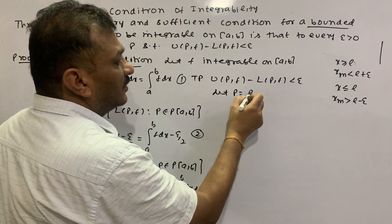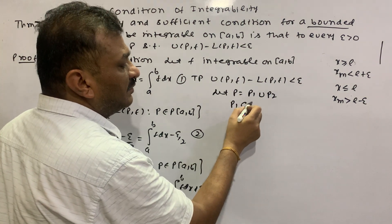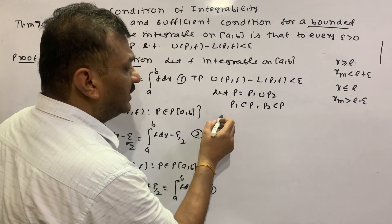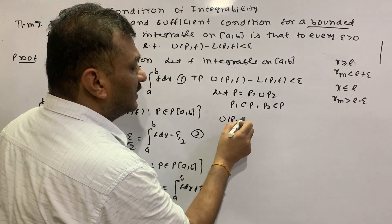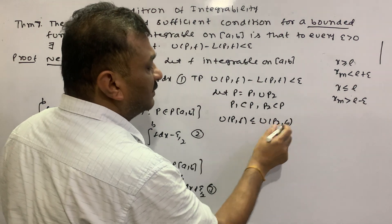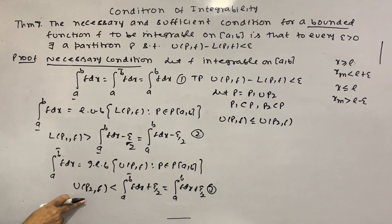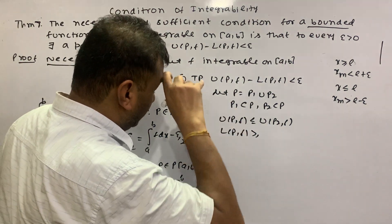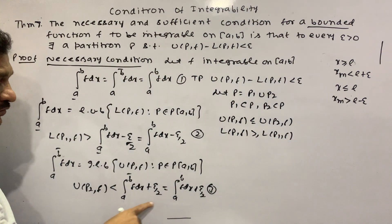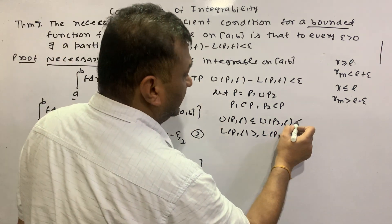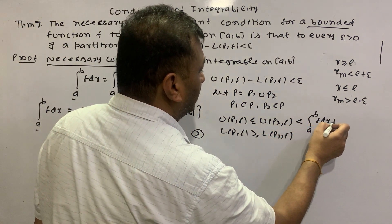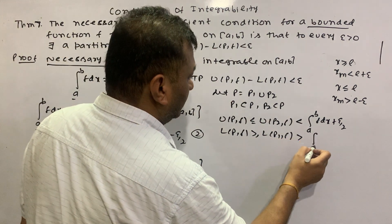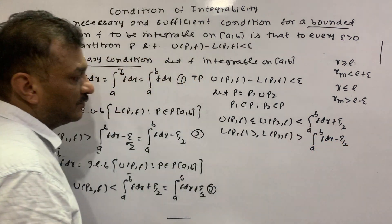Now let P be a common refinement of P1 and P2, meaning P1 is a subset of P and P2 is a subset of P. By the refinement property, UPf is less than or equal to UP2f, and LPf is greater than or equal to LP1f. Therefore UP2f is less than the integral from a to b of f(x) dx plus epsilon by 2, and LP1f is greater than the integral from a to b of f(x) dx minus epsilon by 2.